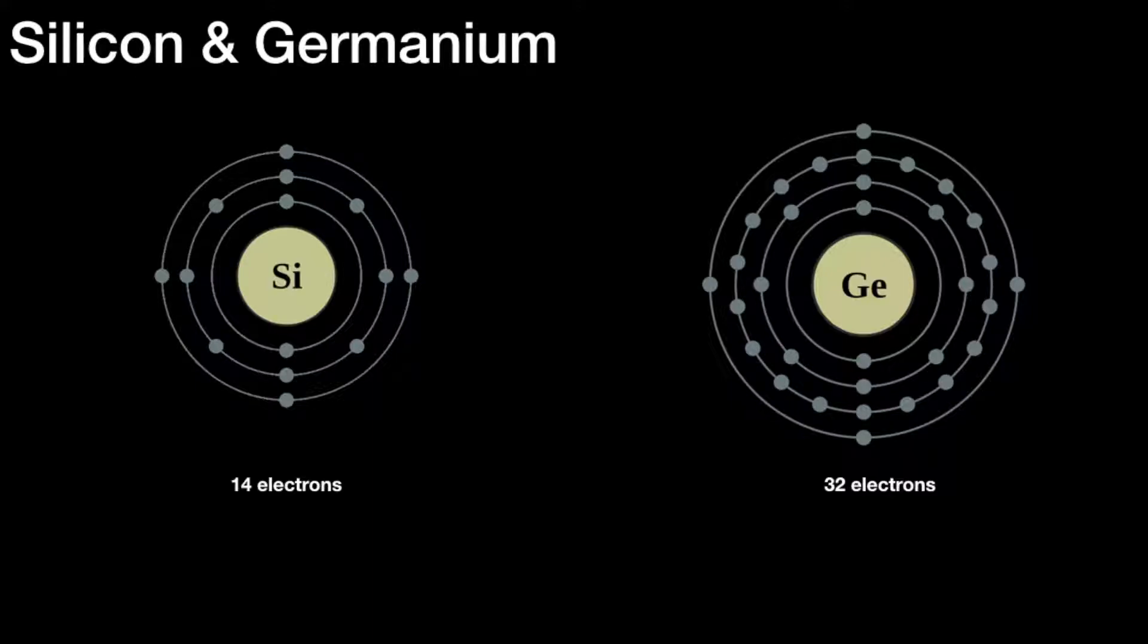Two elements are commonly used when semiconductors are involved. On the left you can see Si, which stands for silicon, and on the right Ge for germanium. There is the simplified atomic structure of each of those elements. You'll notice that silicon has four electrons in its outer shell, and so has germanium.